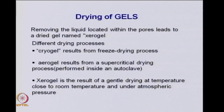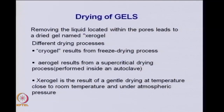Once you get the gels, you have to dry them because the solvent is inside the pores. If you take out the liquid from the pores and make a dried gel, it is called a xerogel. You can get a cryogel from freeze drying, an aerogel from supercritical drying performed inside an autoclave, and a xerogel from gentle drying at temperature close to room temperature and atmospheric pressure.